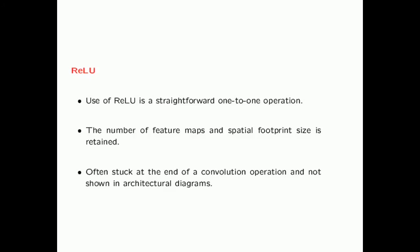Just as in any neural network, you use an activation function. Activation functions are used similarly to conventional neural networks — they don't change the shape of the layer. The length, breadth, and depth remain unchanged because it's a one-to-one operation. For ReLU, you set the value to zero if it's negative, otherwise you copy it. Often, ReLU is not explicitly shown in architectural diagrams — it's typically attached at the end of convolutional operations.